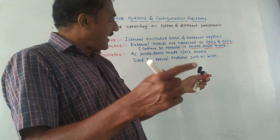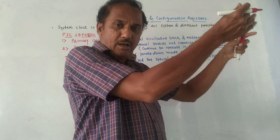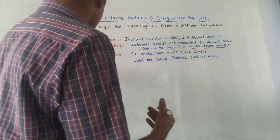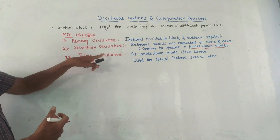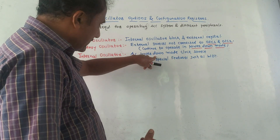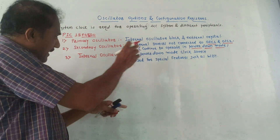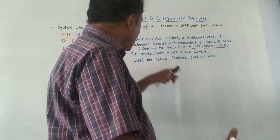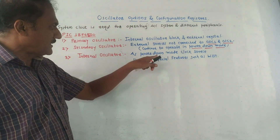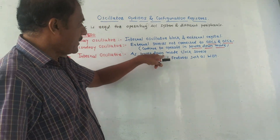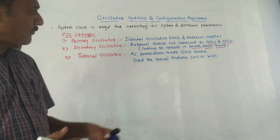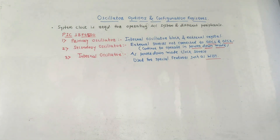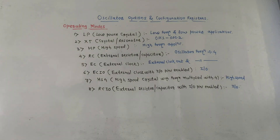Third is the internal oscillator. It is a special type of oscillator designed especially for providing clock signals in power-down mode, so it acts as the clock source in power-down mode. It is also applicable for special features like WDT, which is the watchdog timer.